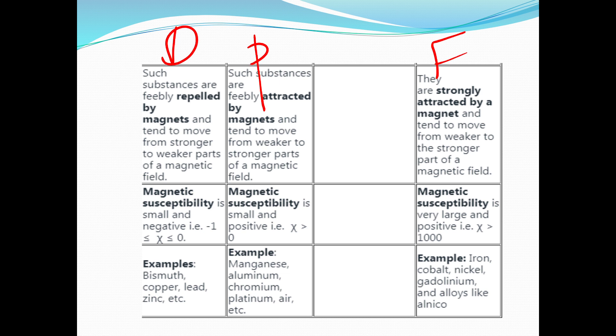Examples are very important. Diamagnetic examples: bismuth, copper, lead. Paramagnetic examples: manganese, aluminum, copper, platinum. Ferromagnetic examples: cobalt, nickel, etc. Learn these examples carefully.